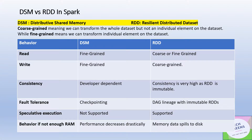DSM is a distributed shared memory. RDD, as you all are aware, is a resilient distributed dataset. One more definition we'll look at before we get into the comparison: what is coarse-grained and what is fine-grained. This is an important concept.